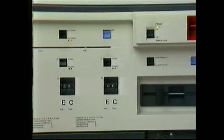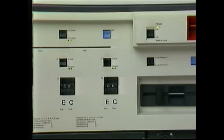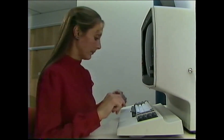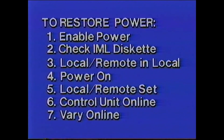When the IML is complete, the light on the diskette drive goes out and the wait indicator is lit continuously. Set the local/remote power switch according to your requirements. Put the control unit online/offline switch in online. When the offline indicator goes out, the procedure is complete. Then vary the channel paths and drives back online on the desired systems.